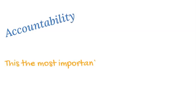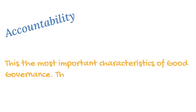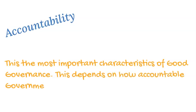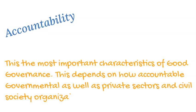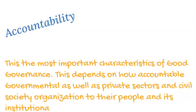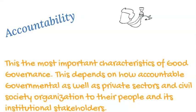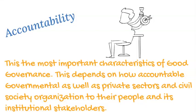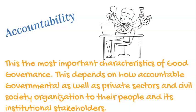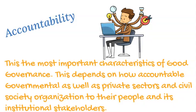Accountability. This is the most important characteristic of good governance. This depends on how accountable governmental as well as private sectors and civil society organizations are to their people and institutional stakeholders. Both public and private institutions along with civil society organizations must be accountable to the public and to their institutional stakeholders. Accountability cannot be enforced without transparency and the rule of law.